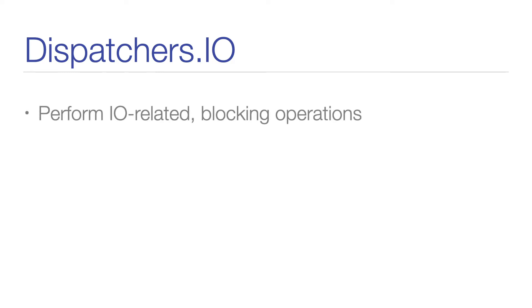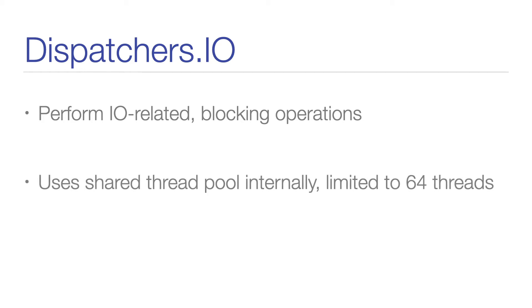The next dispatcher we are going to take a look at is the IO dispatcher. As the name suggests, we should use this dispatcher in coroutines that perform IO-related blocking operations, like reading from the network or from disk. This dispatcher internally uses a shared pool of threads, in which threads are created and shut down on demand. This thread pool is limited to 64 threads, but can be configured to use even more.